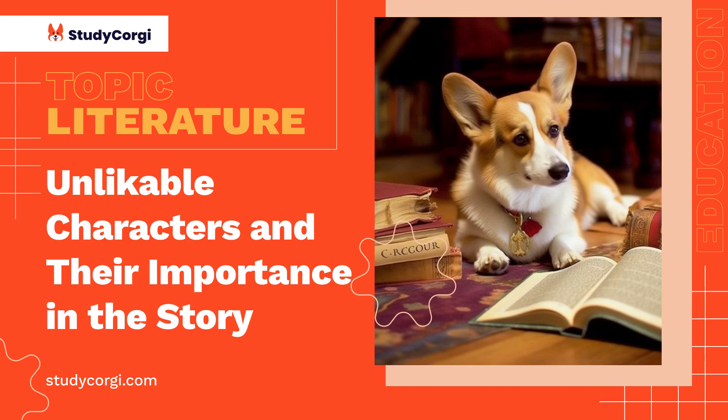An excellent example of an opposing character that improves the storyline can be found in Miss Adele Among the Corsets, a short story written by Zadie Smith. The protagonist of the story, a transgender woman Miss Adele, finds herself in a situation where she is blatantly disrespected as a customer and as a person by the owner of the shop. Mr. Alexander, the man in charge of the store selling corsets, appears to be the story's main antagonist, demonstrating contempt and disregard towards Miss Adele and her interest in purchasing the merchandise.